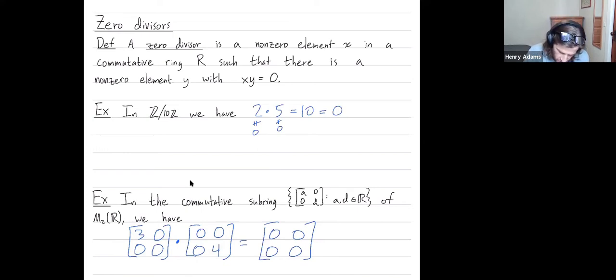So neither of these matrices are the zero matrix, not equal to zero, but really I mean not equal to the zero matrix. Whereas this matrix is the additive identity.